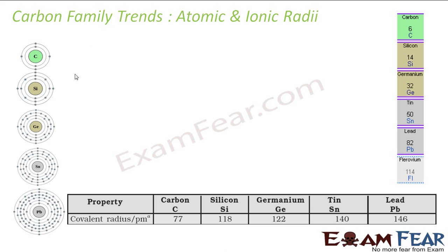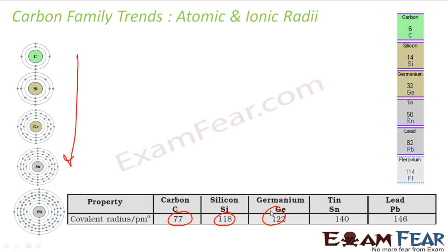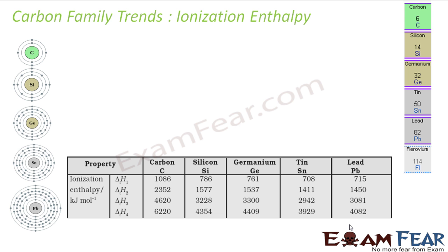Let's talk about atomic and ionic radii. The moment you go down the group, the number of shells increases, and thus the atomic size increases. The charge of the nucleus increases, but due to the shielding effect, the effective nuclear charge does not increase as much compared to the number of shells. So going down the group, generally the atomic size increases.